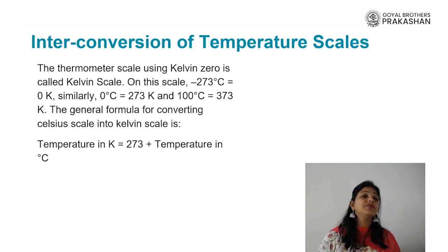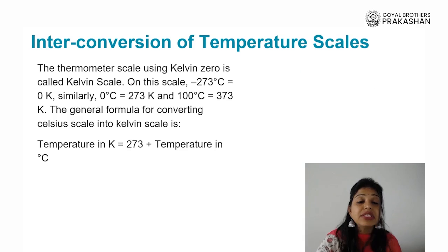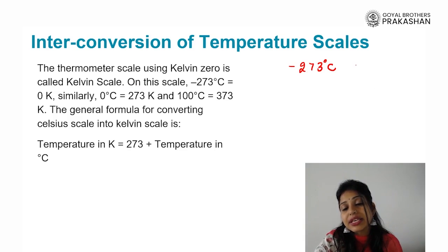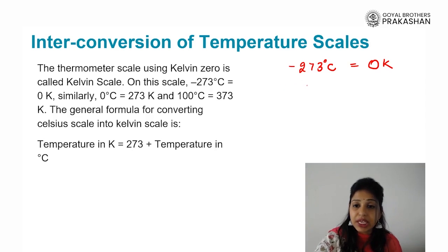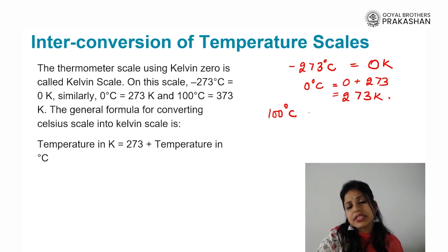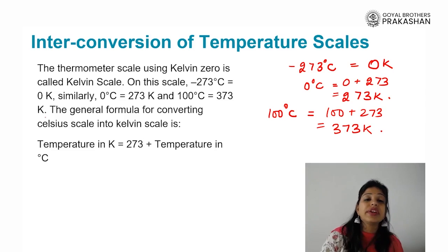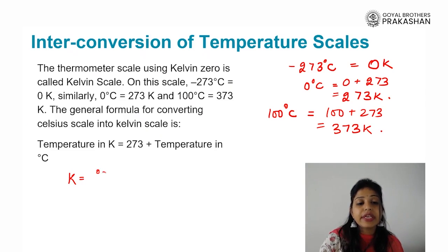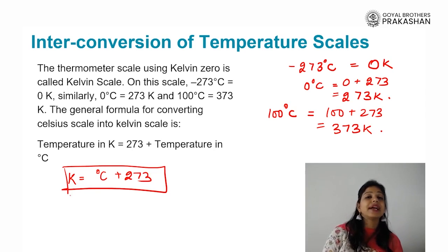The relation between degrees Celsius and Kelvin is straightforward: on the Kelvin scale, 0 Kelvin corresponds to minus 273 degrees Celsius. That means 0 degrees Celsius equals 0 plus 273, which is 273 Kelvin. And 100 degrees Celsius equals 100 plus 273, which is 373 Kelvin. The general formula for converting Celsius to Kelvin is simply: take your temperature in degrees Celsius and add 273. You will get your answer in Kelvin, which is the SI unit.